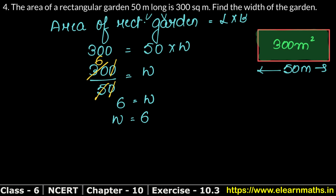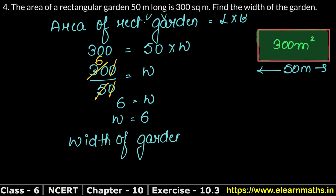So the width of the garden has come out. Since the unit was in meters, 6 meters is the answer.